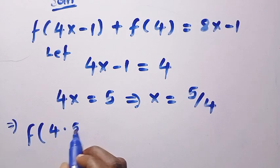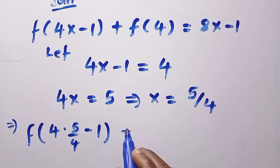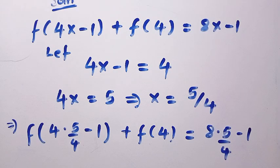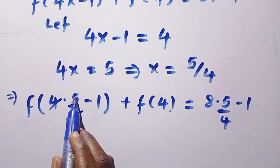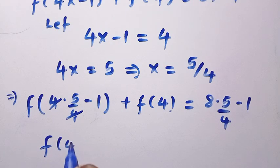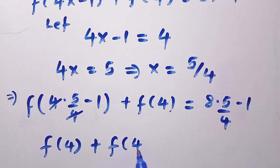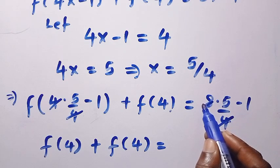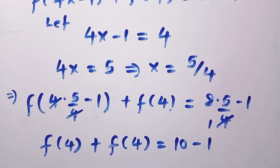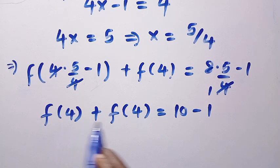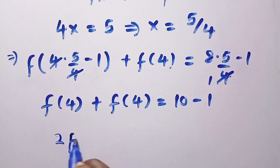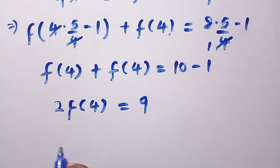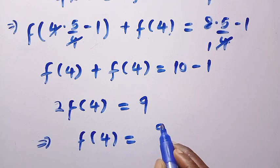Therefore, we have 4 multiplied by 5 over 4 minus 1 plus f of 4 equals 8 multiplied by 5 over 4 minus 1. The 4s cancel, giving us 5 minus 1 equals 4, so we get f of 4 plus f of 4. On the right side, 8 over 4 is 2, so 2 times 5 minus 1 equals 9. This gives us 2 times f of 4 equals 9.